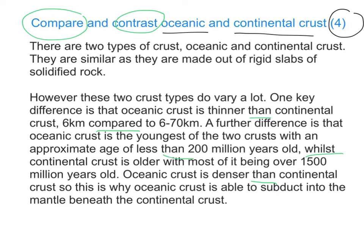In this second paragraph, we have also commented on a number of characteristics: the thickness, the age compared, and lastly the density and how that leads to subduction. This is what you should include in a question related to oceanic and continental crust.